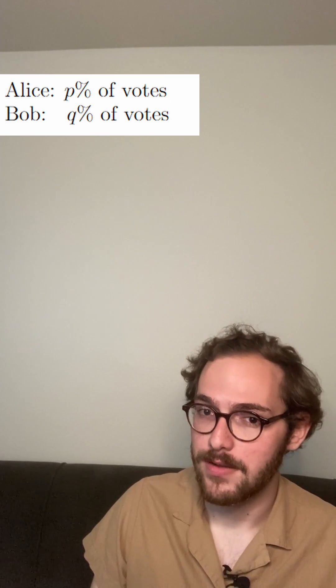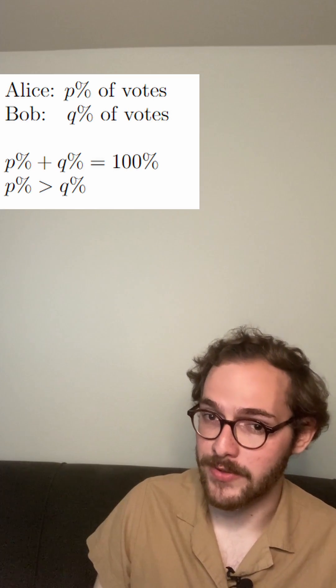There are two candidates, Alice, who gets p% of the vote, and Bob, who gets q%. For the sake of simplicity, we assume that p is greater than q.